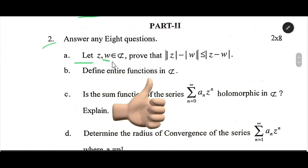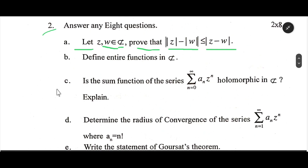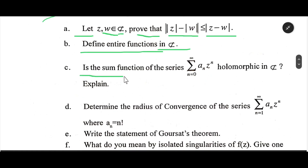Number 2: Let z, w belong to the complex plane. Prove that |z| minus |w| is less than or equal to |z minus w|. Define entire function. Is the sum function of the series summation n=0 to infinity of a_n z^n holomorphic in the complex plane?